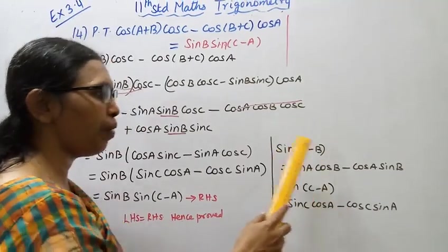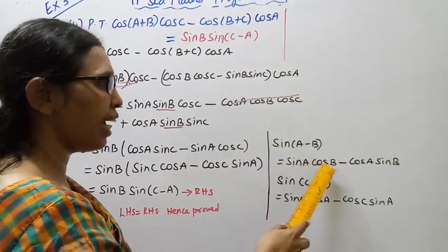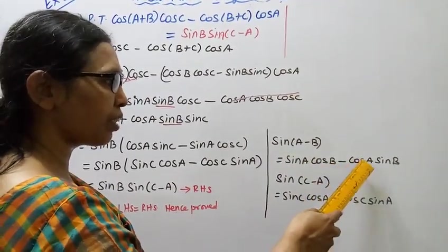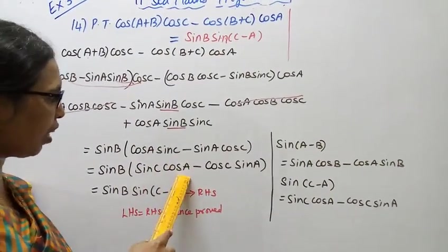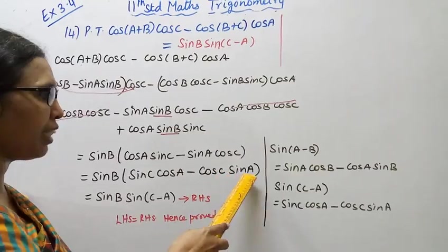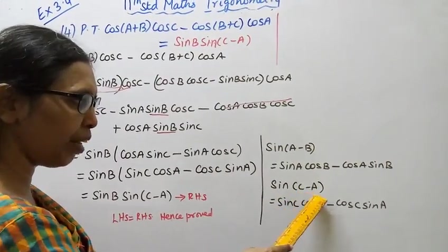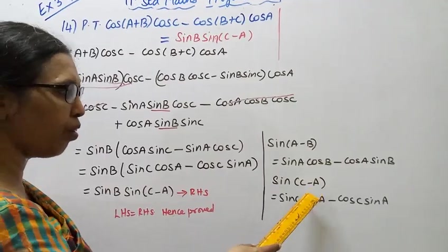Now sin(A-B) equals sin A cos B minus cos A sin B. If you look at sin C cos A minus cos C sin A, then sin(C-A).